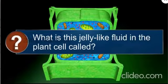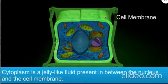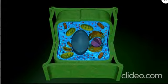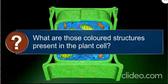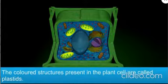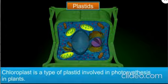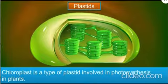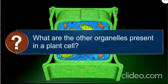What is this jelly-like fluid in the plant cell called? Cytoplasm is a jelly-like fluid present in between the nucleus and the cell membrane. It contains a number of organelles. Those colored structures present in the plant cell are called plastids. Chloroplast is a type of plastid involved in photosynthesis in plants, and this gives the leaves their green color.